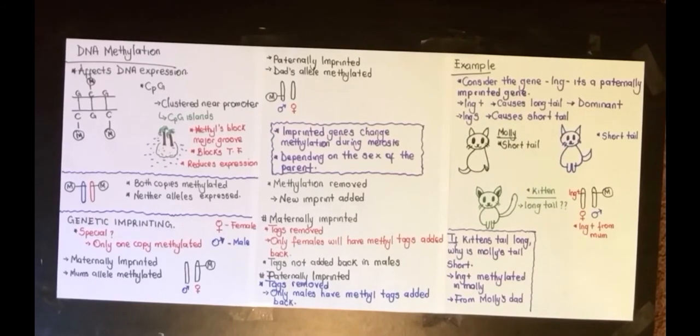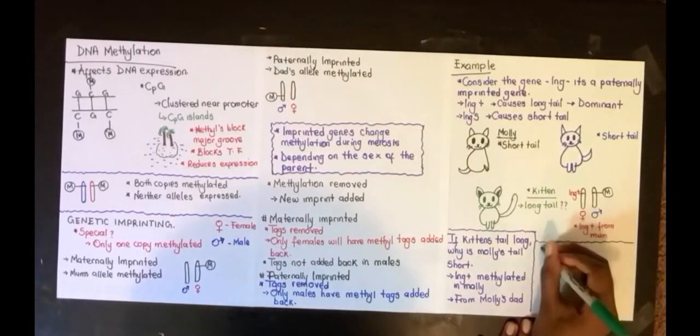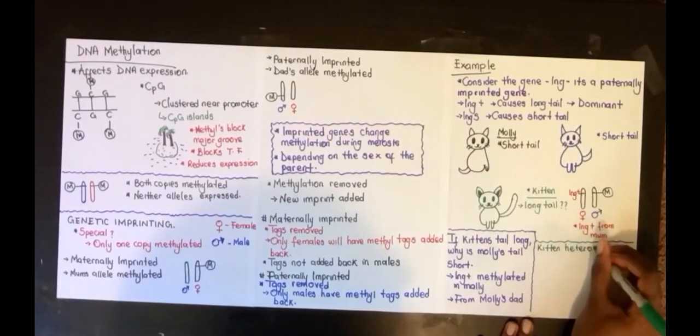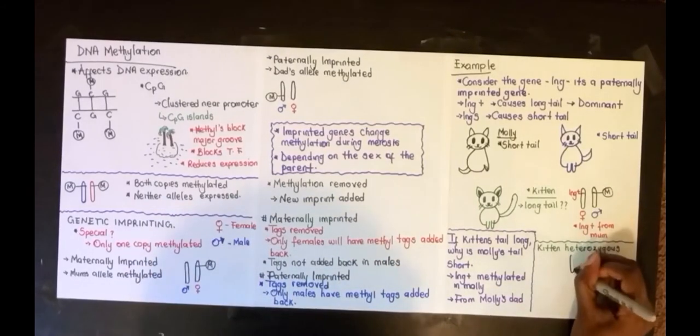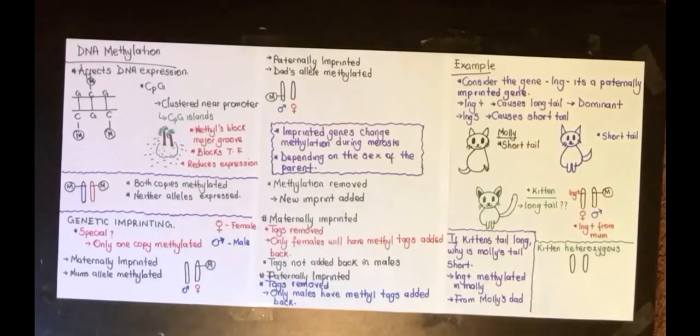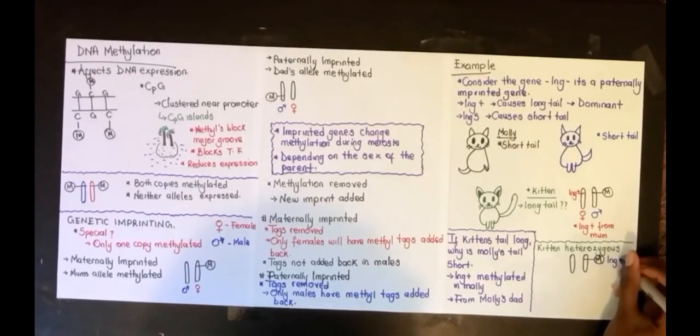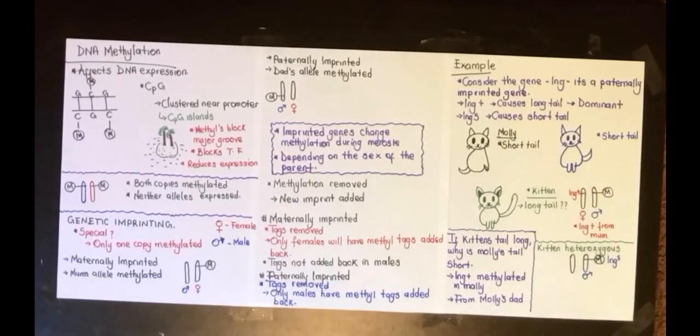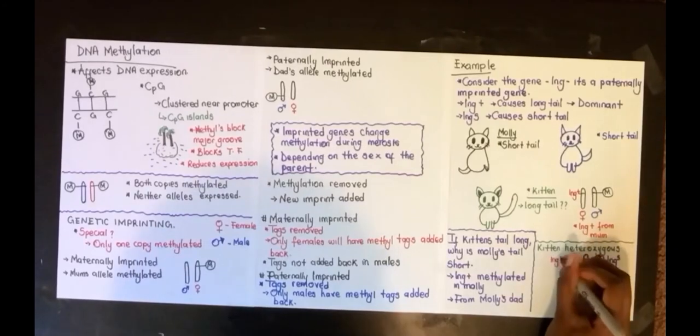Let's go over the concept of what happens in meiosis again. We'll use this example: if the kitten was male, would it be able to pass on a methylated copy of its alleles? Now, the kitten is heterozygous for this gene—it has long plus and long S. It has the long plus from mom, as we previously talked about from Molly, and the methylated allele long S is from dad.